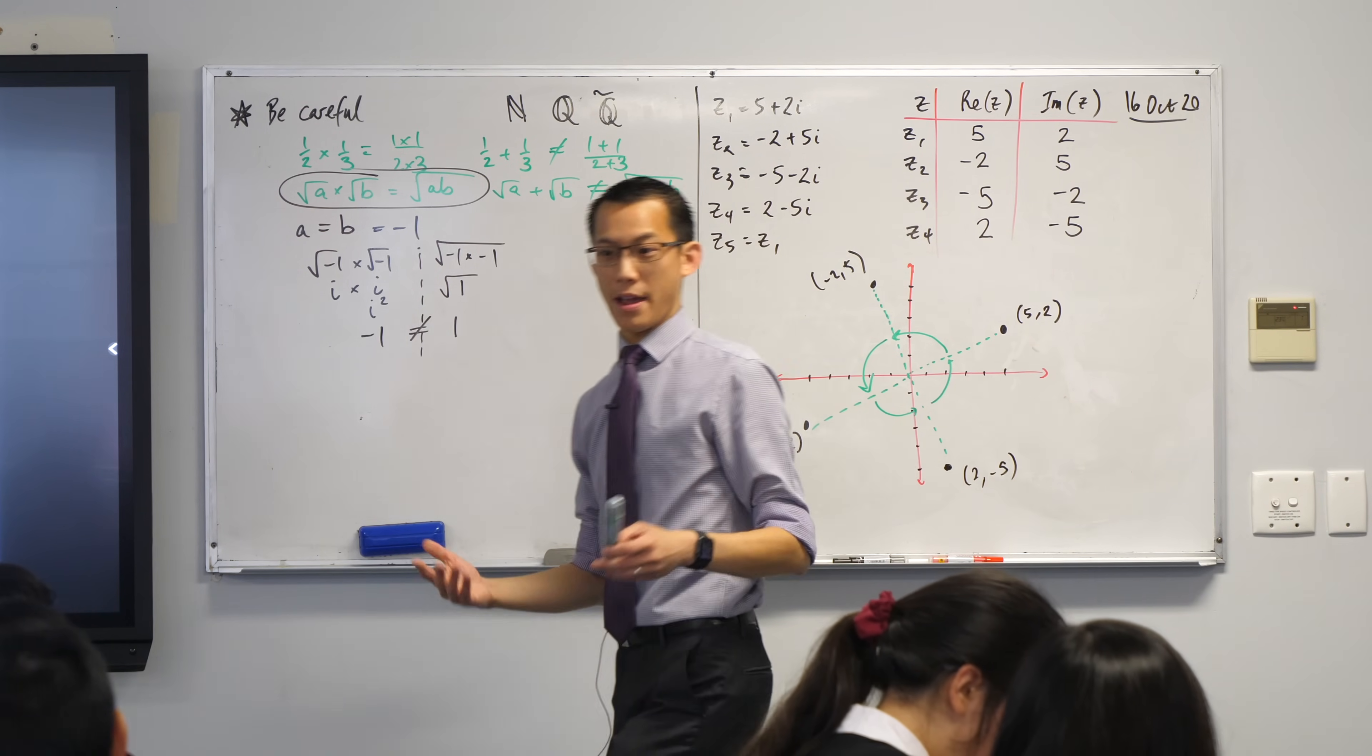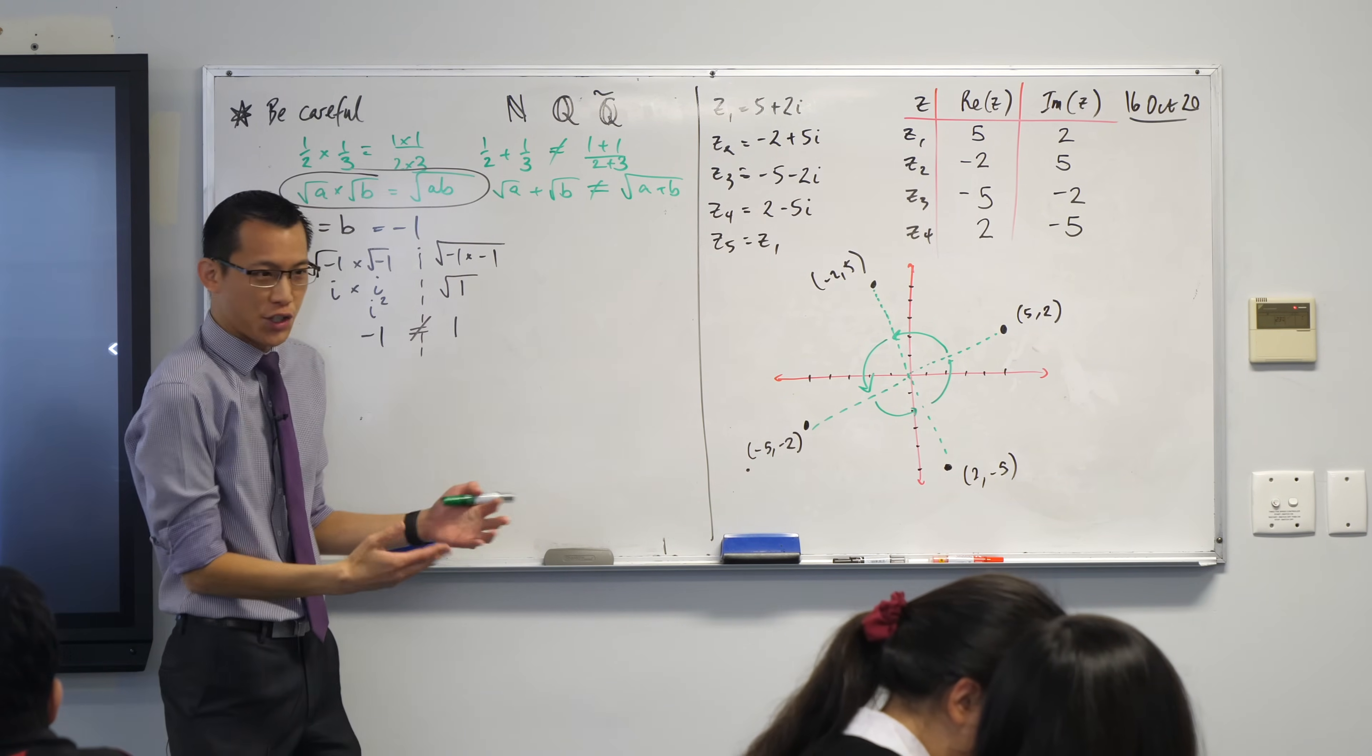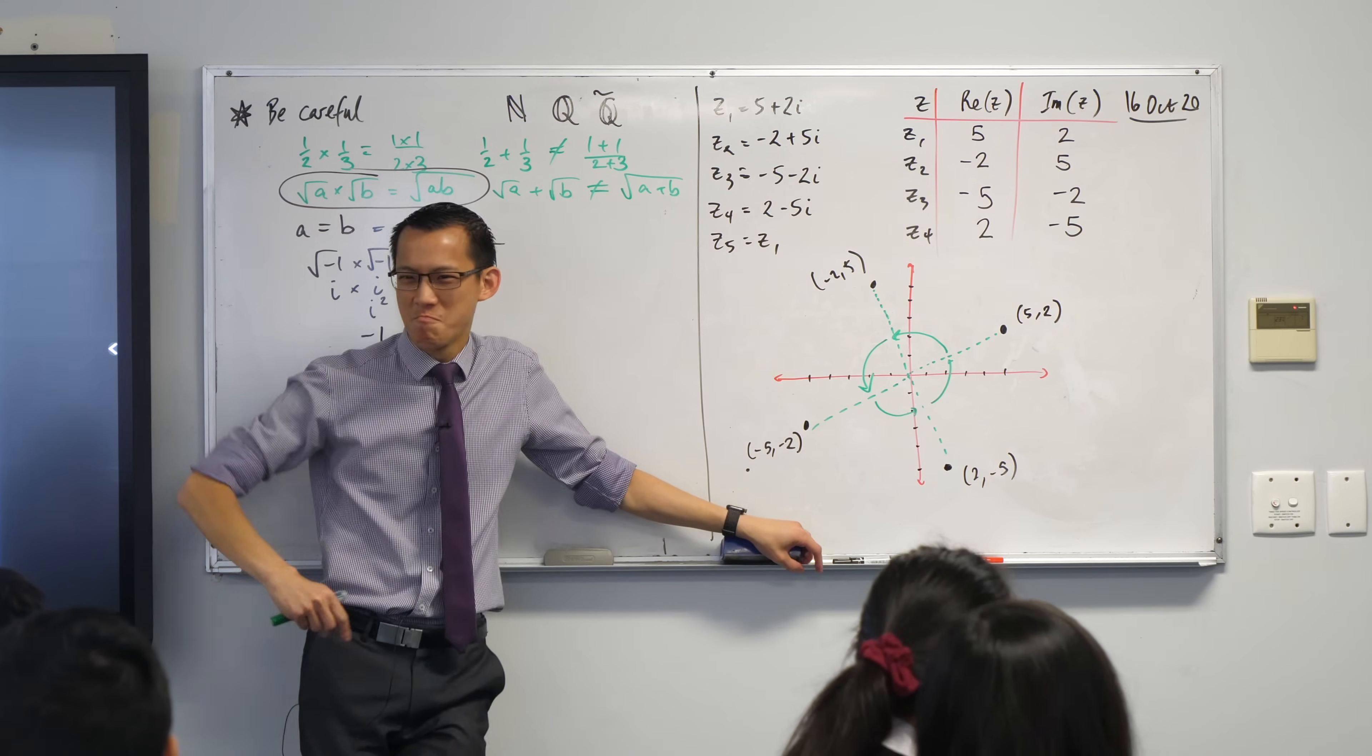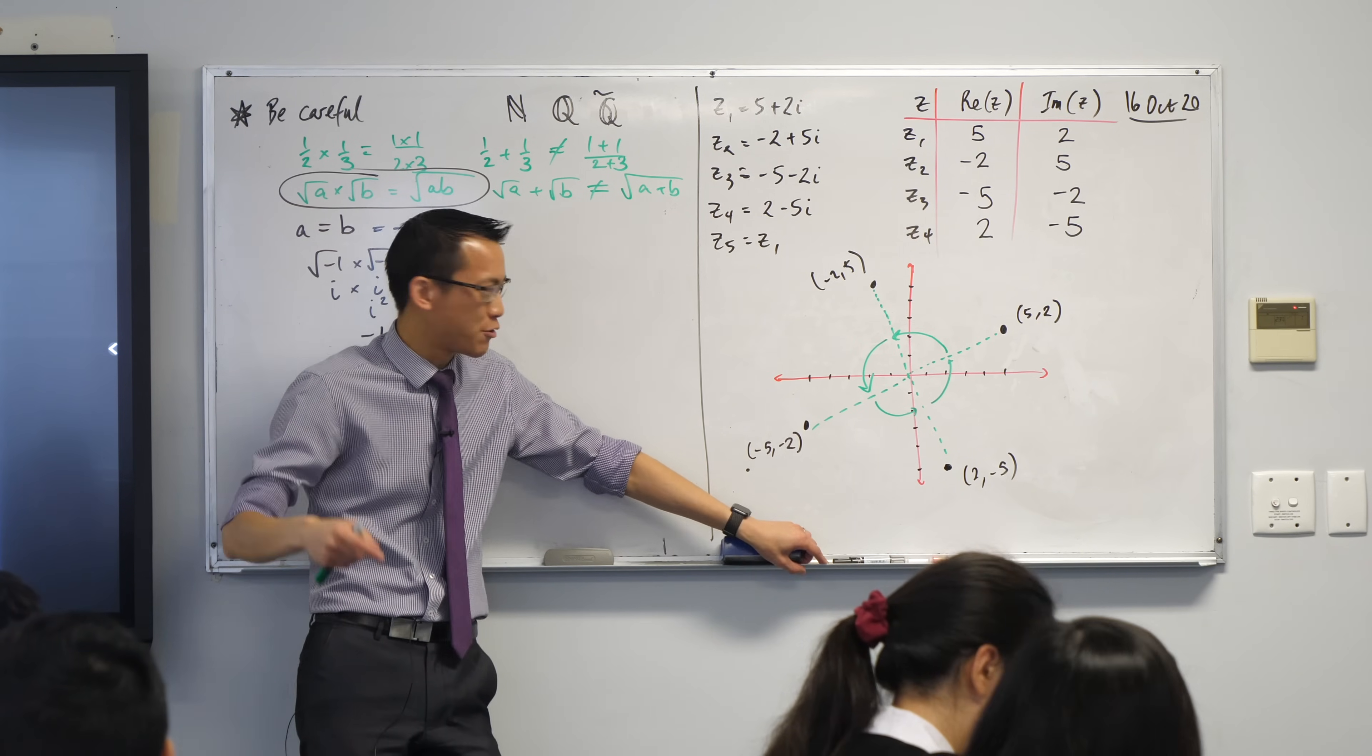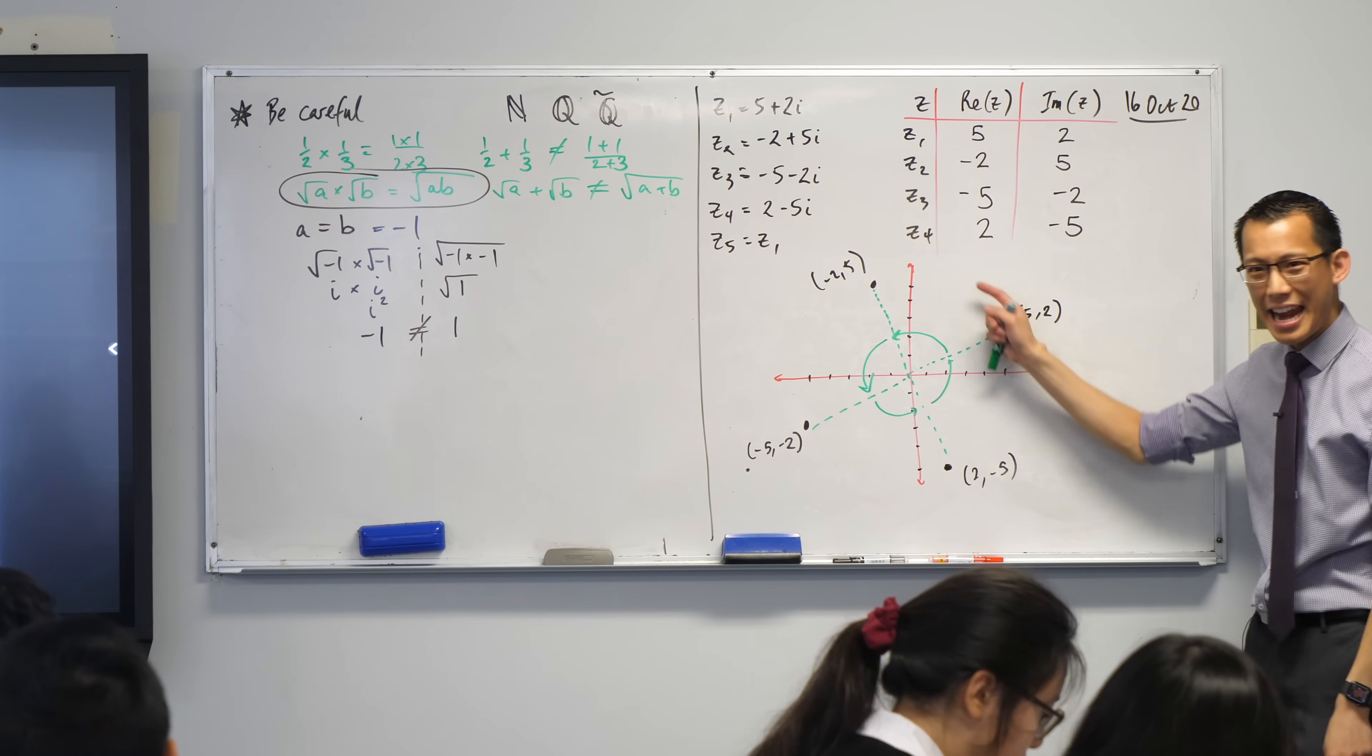If you ever wondered why, when we do compass bearings, we say start from true north and then go clockwise. But then for some reason, when we moved into the Cartesian plane, we then said, actually, we want you to go anticlockwise. Don't worry about why. We just want to mess with you and make things as hard and arbitrary as possible. Why are we going the opposite direction? The answer is because of this. Multiplication by i, it's rotating you around.